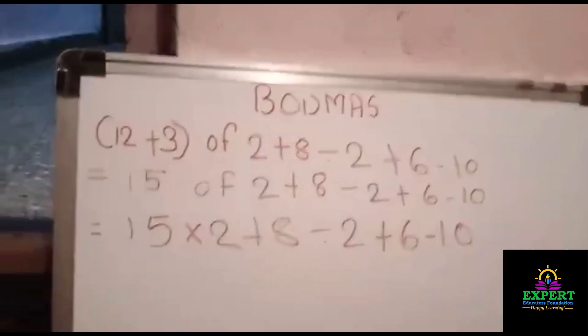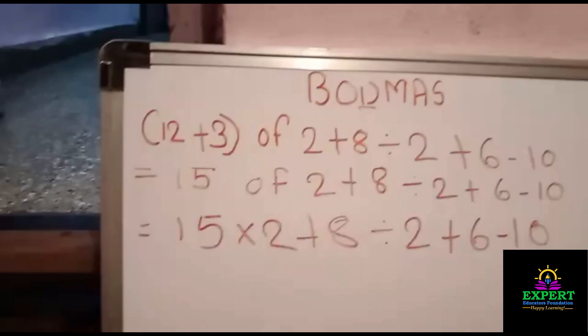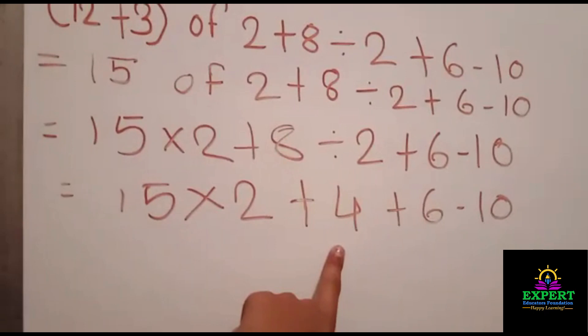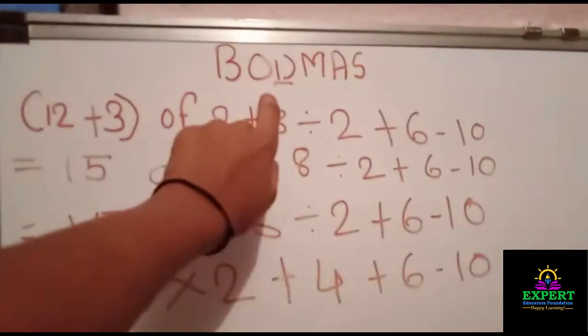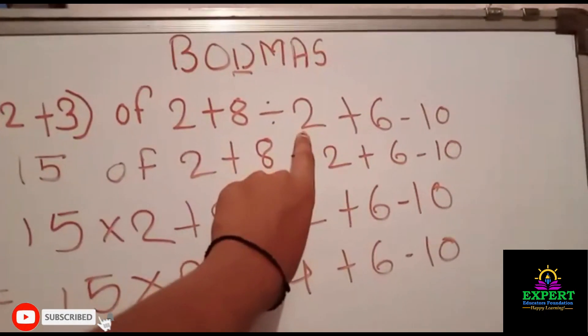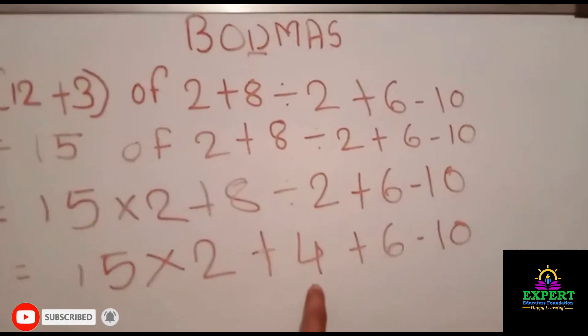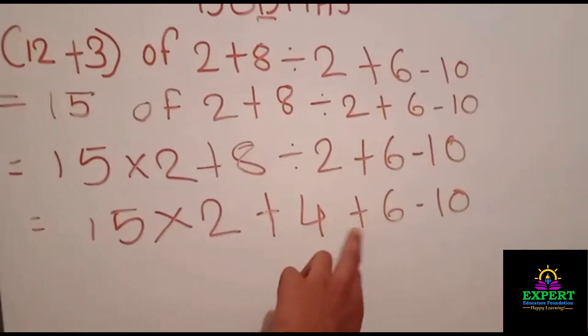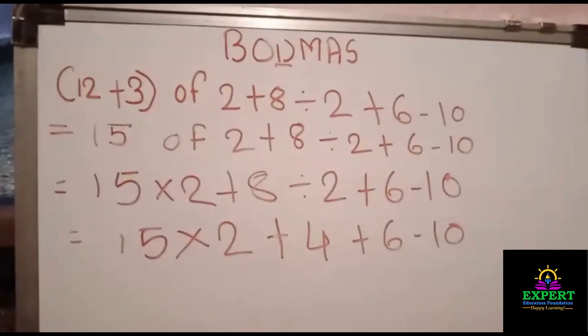So now it is time for D. D means division. So let's start it. So you will say how here 4 came. So it was the time for division. So 8 divided by 2 is equal to 4. So 15 multiplied by 2 plus 4 plus 6 minus 10. Did you get it?